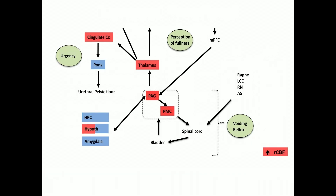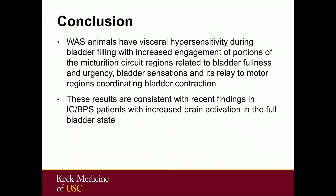This is a schematic of what this network looks like. The pontine micturition center and the periaqueductal gray, in the middle, involve spinal cord activation on the bladder, leading to bladder contraction. Many of these areas we're seeing in the animal model, as well as in humans, are involved with perception of fullness and urgency. In conclusion from the animal protocol, the water avoidance stress animals have visceral hypersensitivity during bladder filling, with increased engagement of portions of the micturition circuit related to bladder fullness, urgency, bladder sensation, and motor regions coordinating bladder contraction.